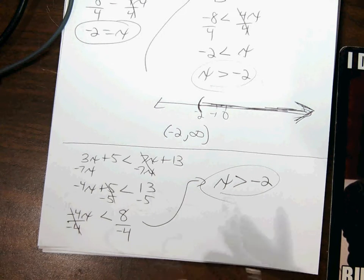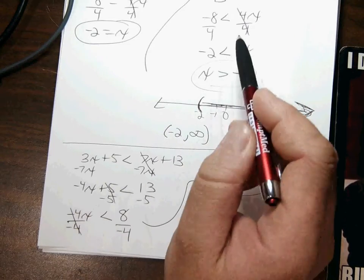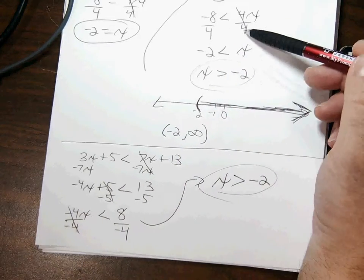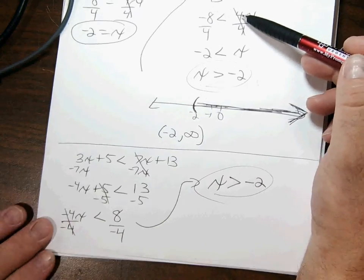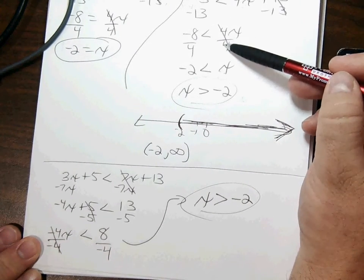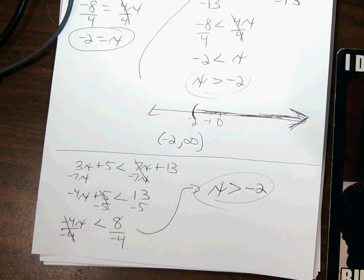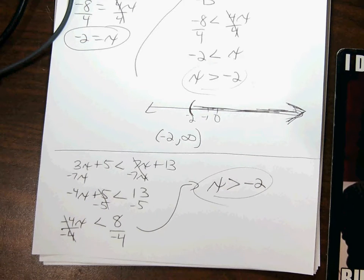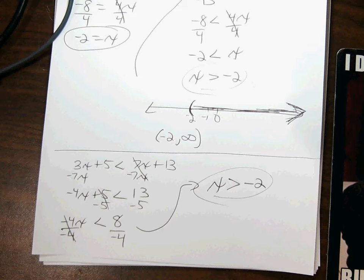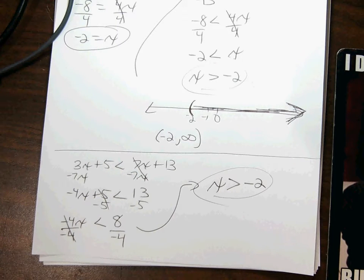That's the big catch with inequalities: if you multiply or divide through by a negative number, you have to switch the inequality symbol around — the old switcheroo. You only do this when multiplying or dividing by a negative, not otherwise. The reason the textbook worked with x on the right was to get a positive coefficient, avoiding the flip. But be consistent — keep x on the left — and just remember to flip the sign if you divide by a negative.